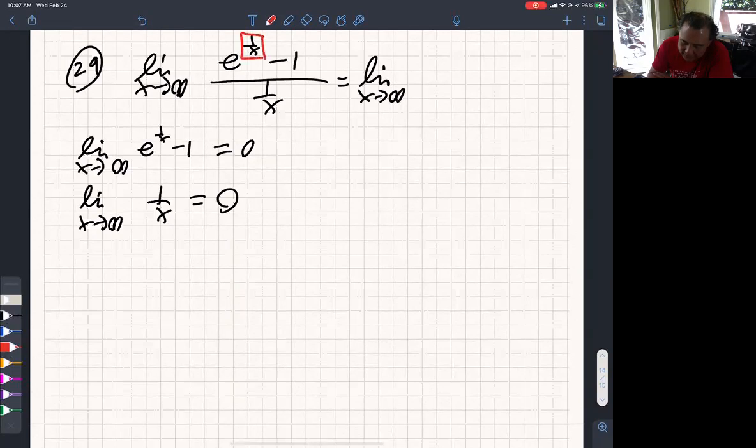This is e to the box. Because that's not a single variable x, I need to treat it as a function. So what's the derivative of e to the box? I am my own grandpa times the derivative of box.